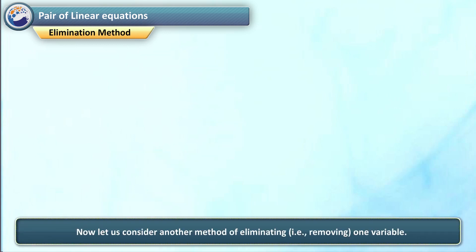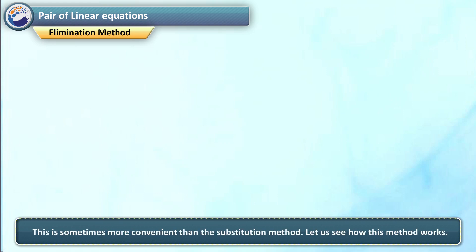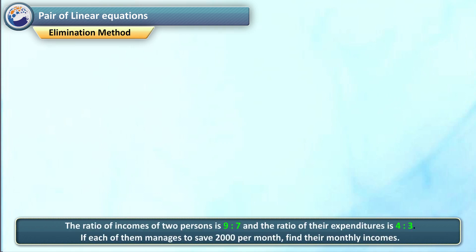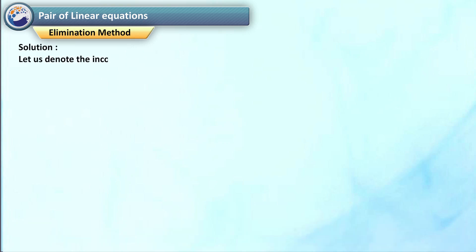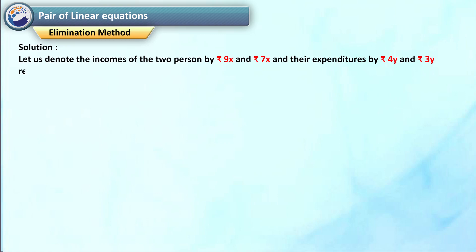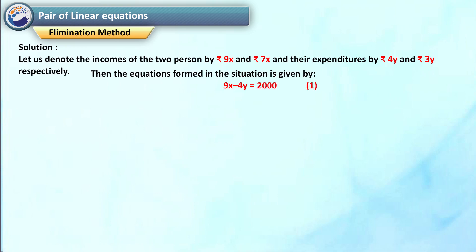Elimination method. Now let us consider another method of eliminating — that is, removing one variable. This is sometimes more convenient than the substitution method. The ratio of incomes of two persons is 9 is to 7 and the ratio of their expenditures is 4 is to 3. If each of them manages to save rupees 2000 per month, find their monthly incomes. Solution: Let us denote the incomes of the two persons by rupees 9x and rupees 7x and their expenditures by rupees 4y and rupees 3y respectively. Then the equations formed are: 9x minus 4y is equal to 2000 — equation 1, and 7x minus 3y is equal to 2000 — equation 2.